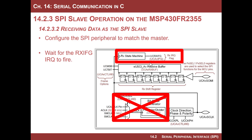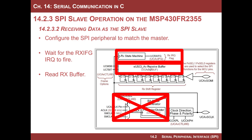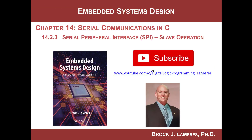You go back to the main program, enable an RxIFG interrupt, and then just do whatever you're doing. When the interrupt fires, you read from the receive buffer, grab the information, and that's it. When you read from the receive buffer, it actually clears the flag. It's quite simple.